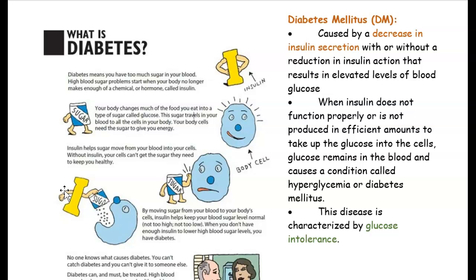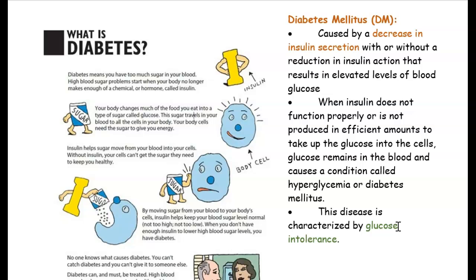To recap: diabetes is basically a sugar disease involving a decrease in insulin. There could be no insulin, so the body cells aren't absorbing any sugar, or there is insulin but it's not functioning properly — a decrease in insulin secretion or dysfunctional insulin. Remember, the sugar in our body is known as glucose. Anything ending in O-S-E is a sugar: fructose, sucrose, glucose. Glucose intolerance is when glucose is not entering your body cells.